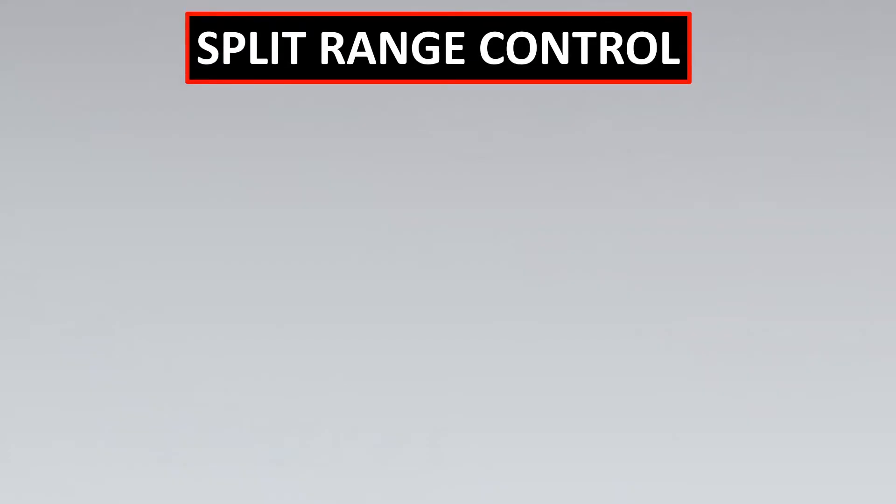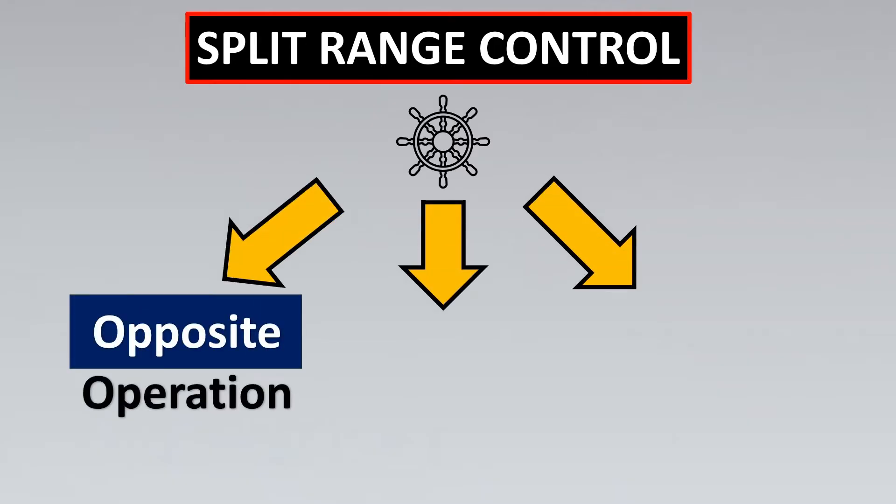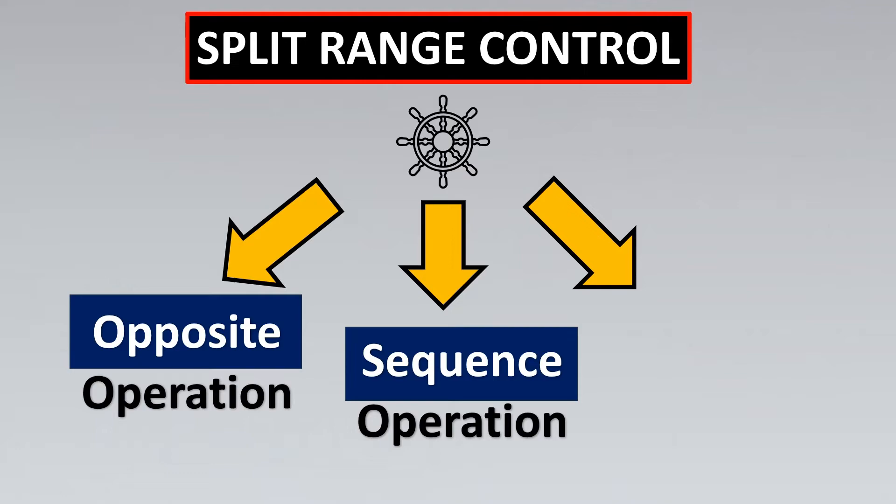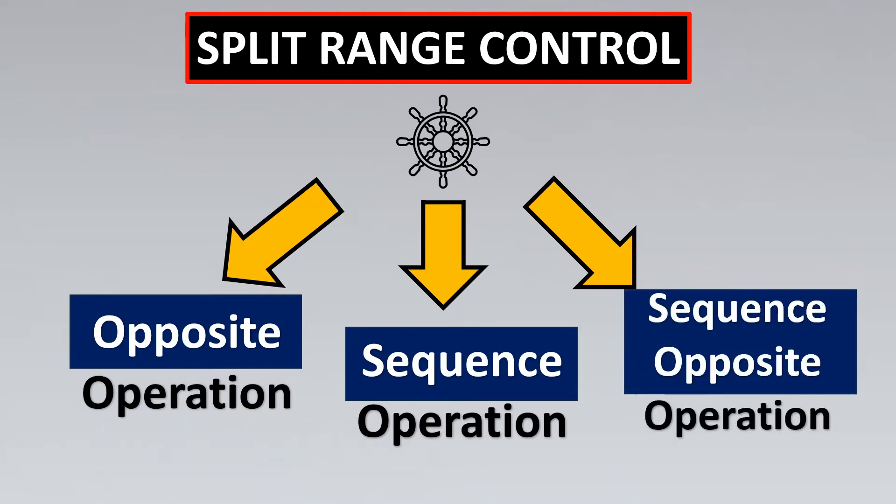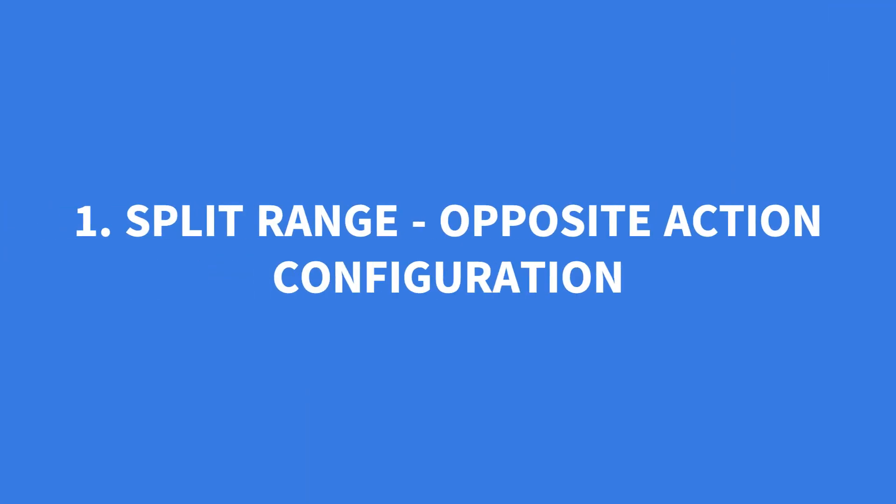Before that remember that split range control has to be divided into three important configurations. One is called opposite operation, the second one is sequence operation, and the final one is a combination of both, that is sequence opposite operation. Let us look at this amazing and interesting concept.